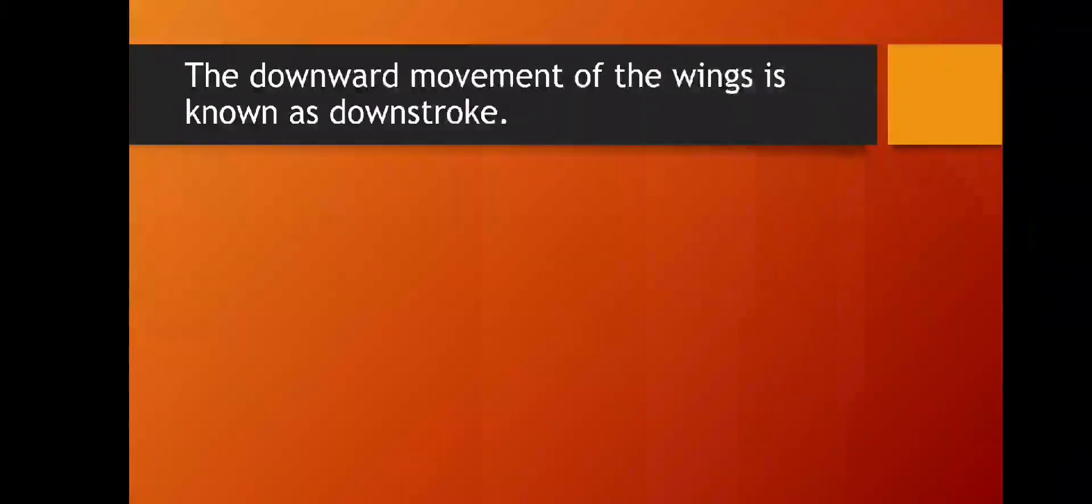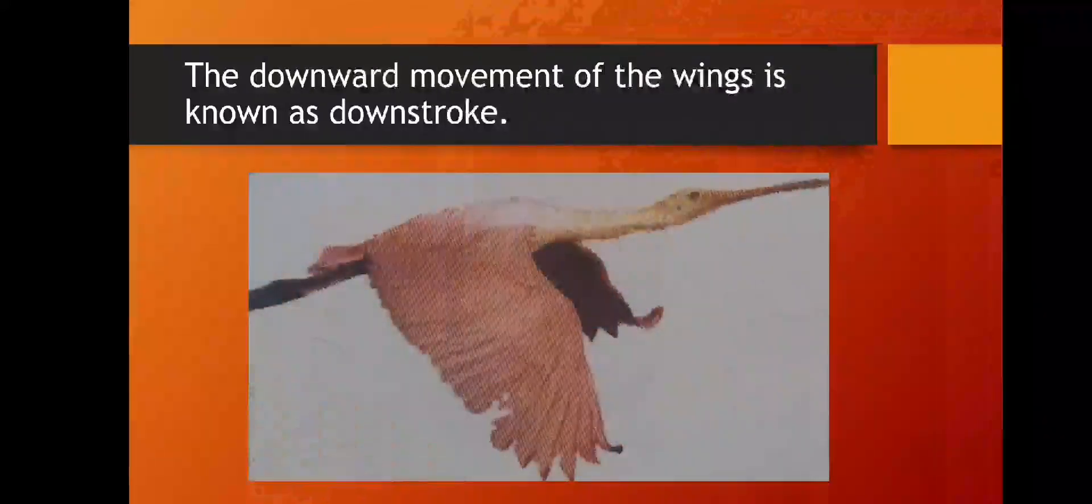The downward movement of the wing is known as downstroke. When birds move their wings in a downward direction, it is called downstroke. Now see, this is the picture of a bird flapping its wings downwards. So it is known as downstroke.